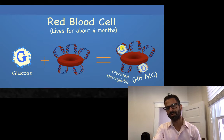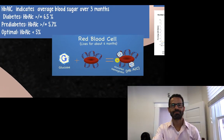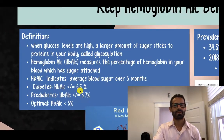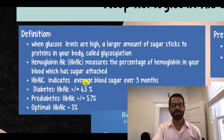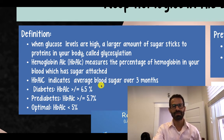The higher the blood sugar or the blood glucose, the more red blood cells will have glycated hemoglobin — or glucose attached to hemoglobin. We use the hemoglobin A1c percent as a way of knowing a person's average blood sugar over the past three months.